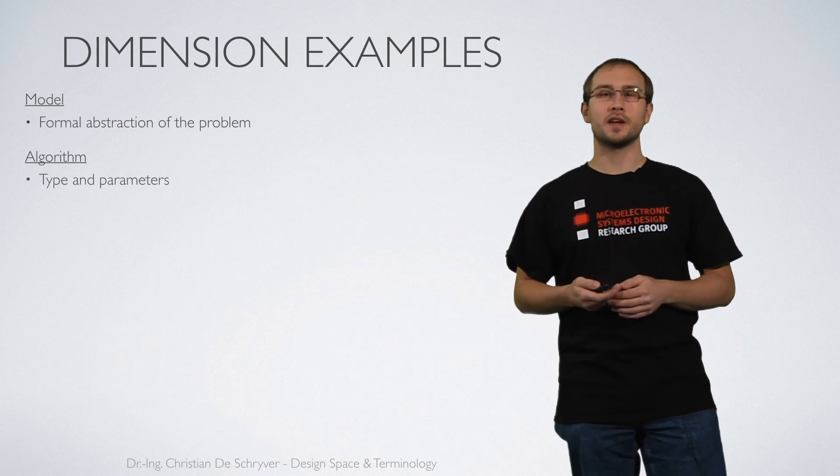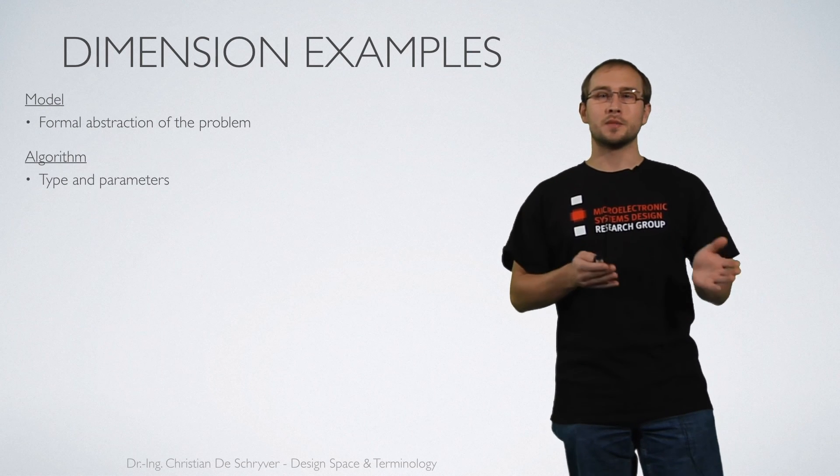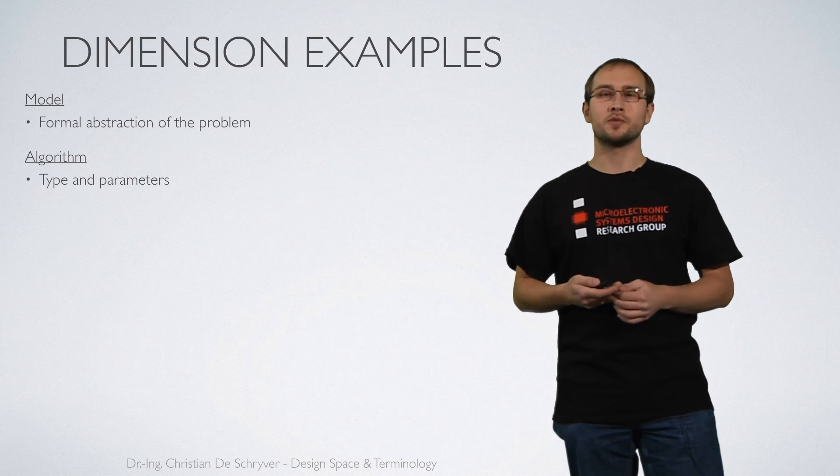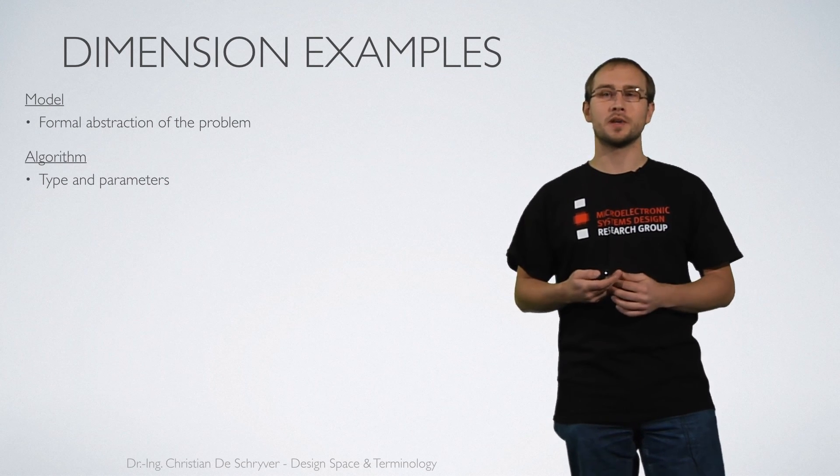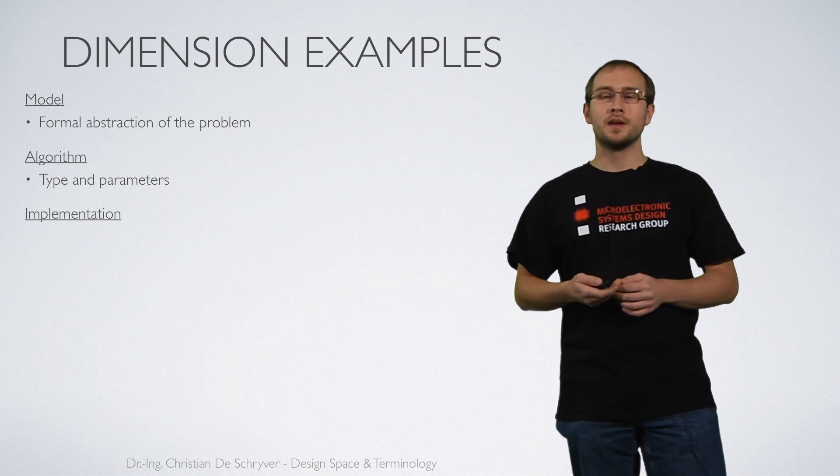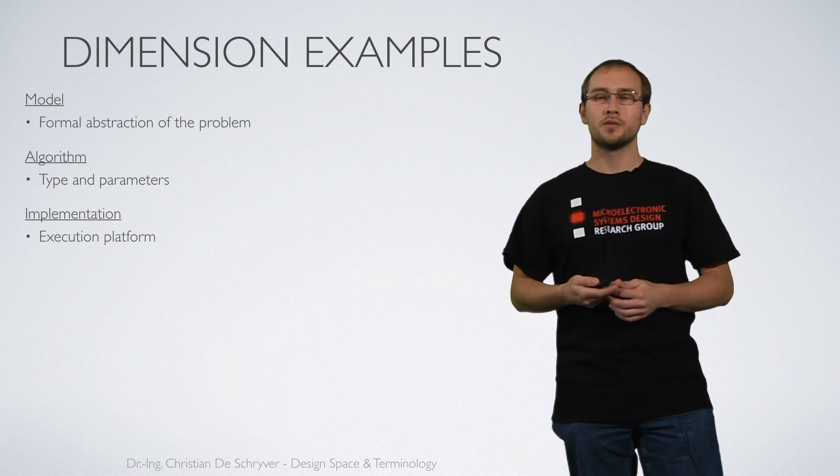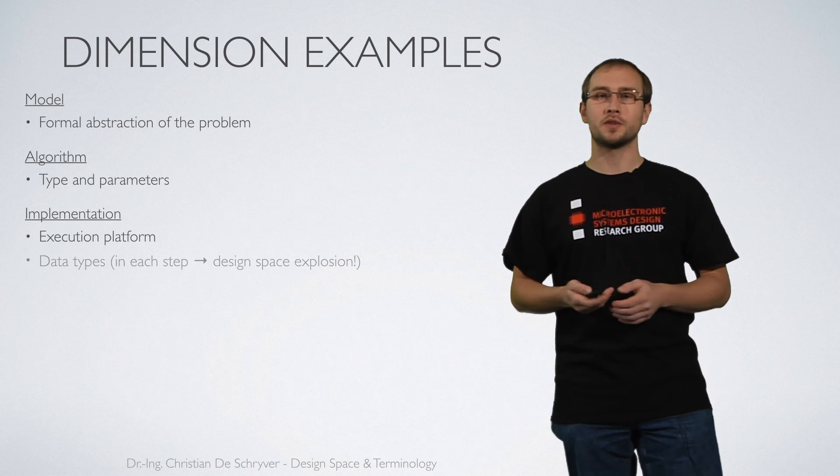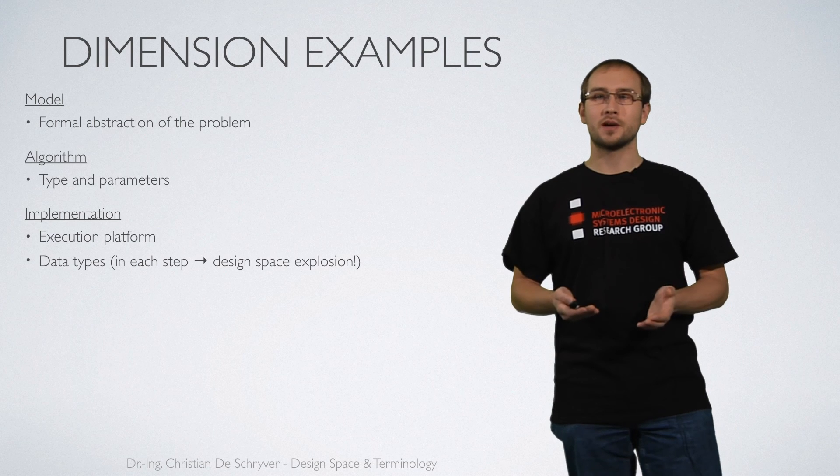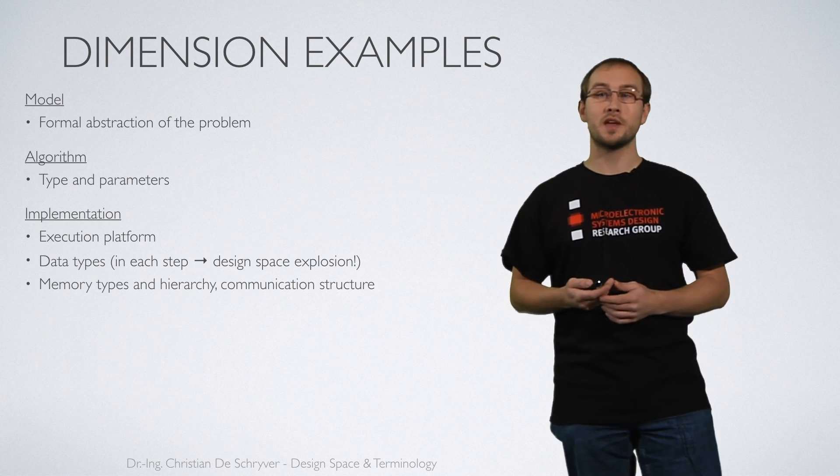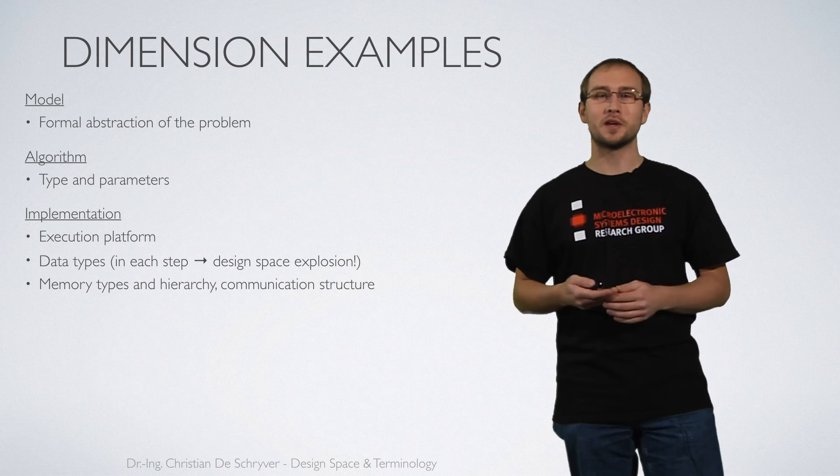The algorithm that we select later on, the type and the parameters of the algorithm, also have a big influence on future optimization strategies that we can perform. Then we have decisions that need to be done regarding the implementation. For example which execution platform we take or which data types we take. What is the representation of the data in our system in every step? The design space really can explode here.